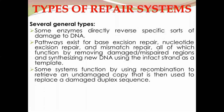In the third type of DNA repair system, some systems function by using recombination to retrieve an undamaged copy, which is then used to replace a damaged sequence. This is commonly known as the recombination repair system, also known as the post-replication repair system. The damaged copy is repaired by first retrieving the undamaged copy and inserting it into the damaged duplex, then synthesizing the undamaged copy anew using the already-replicated strand as template.